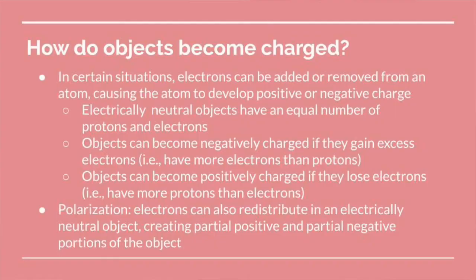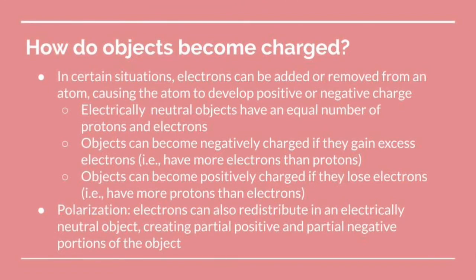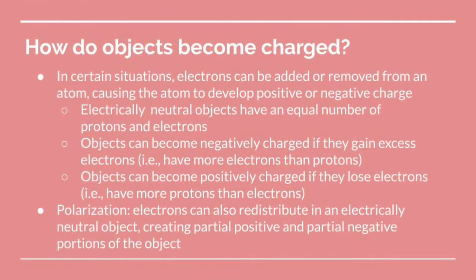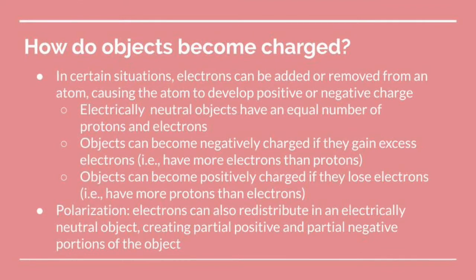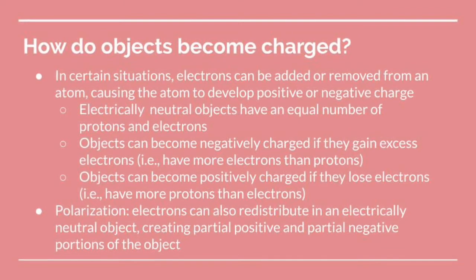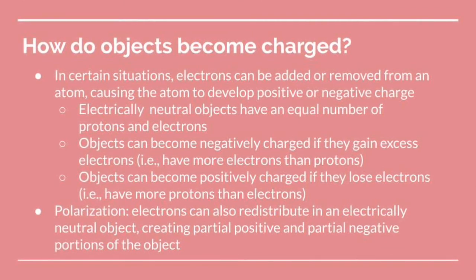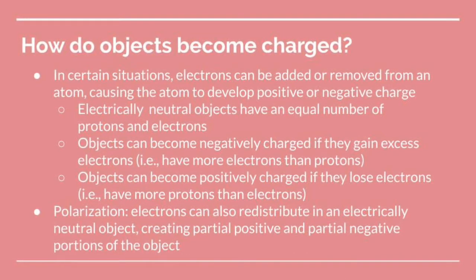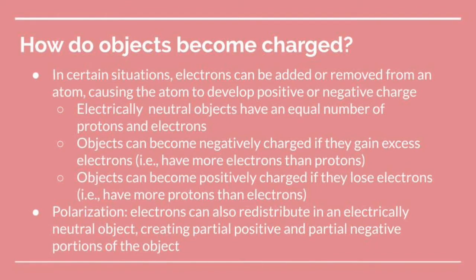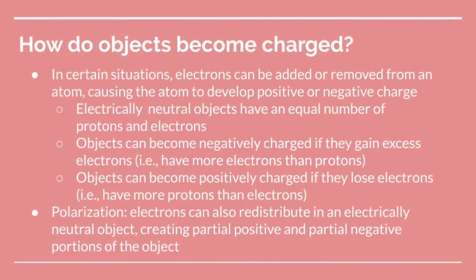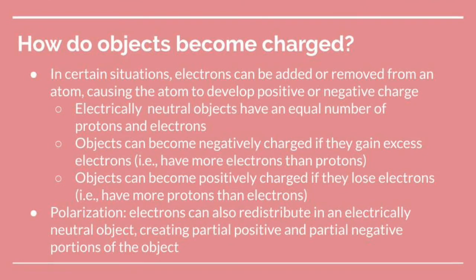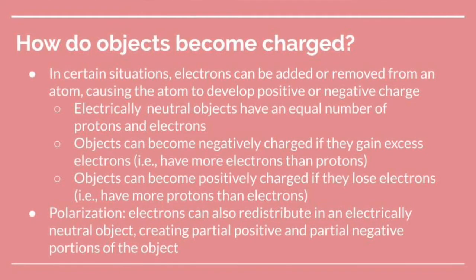Now that we know the nature of matter — the basic parts of the atom and their charges — we're going to talk about how objects actually become charged. In certain situations, electrons can be either added or removed from an atom, which causes the atom to develop a positive or negative charge. It's important to note that you never have a transfer of protons — only electrons are transferred.